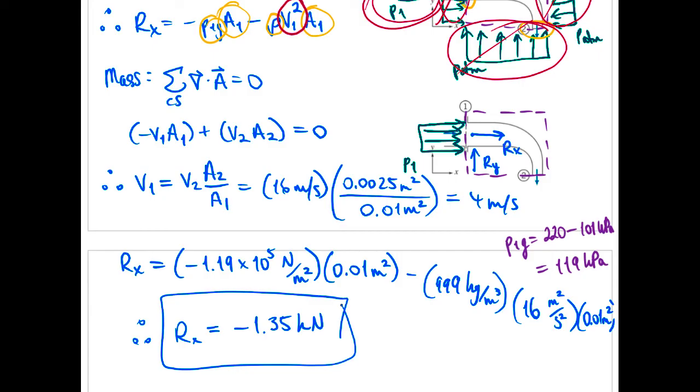Okay negative 1.35 kilonewtons meaning that to hold this elbow in place we have to hold it to the left. So it's a negative of the way we've drawn the positive rx in that figure. Now let's look at the y component.